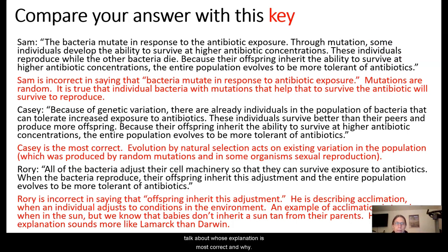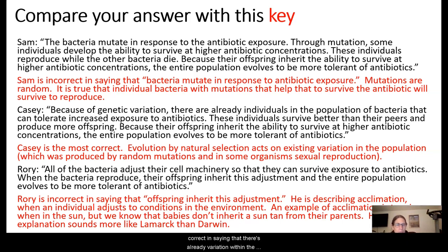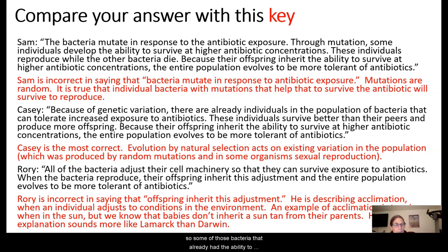Let's talk about whose explanation is most correct and why. Sam is actually incorrect in saying that bacteria mutate in response to antibiotic exposure. Mutations are constantly happening randomly as DNA is copied. It's true that individual bacteria with mutations that help them survive will be able to reproduce, but they're not mutating in response to the presence of antibiotics. Casey, on the other hand, is most correct in saying that there's already variation within the population — produced by random mutations and by the way gametes are made. Natural selection is acting on that already existing variation. Bacteria that already had the ability to tolerate higher antibiotic levels are the survivors, and their DNA becomes more prevalent in subsequent populations.